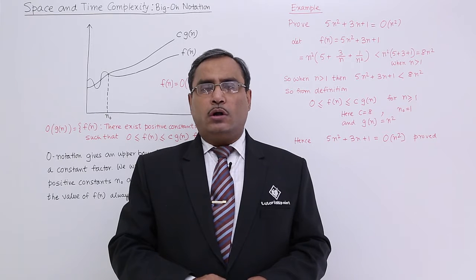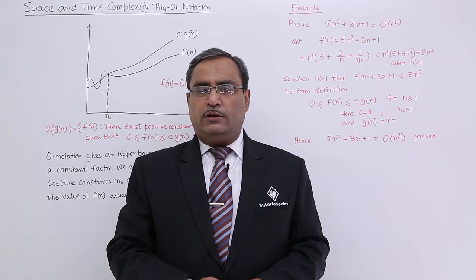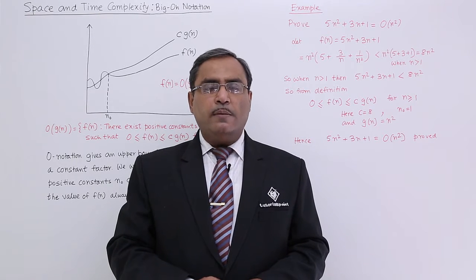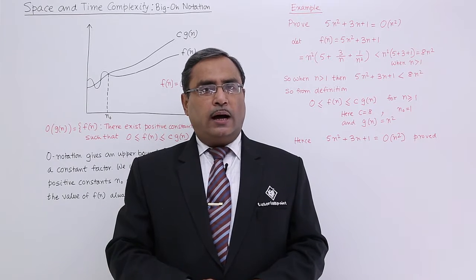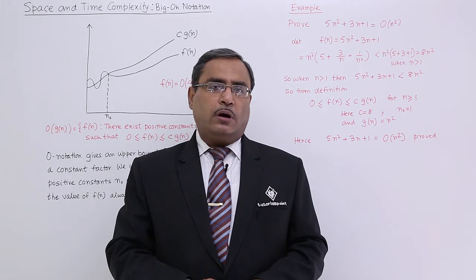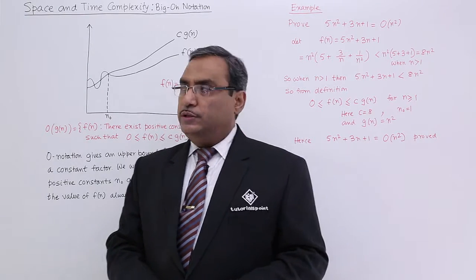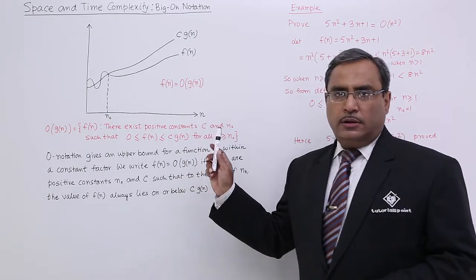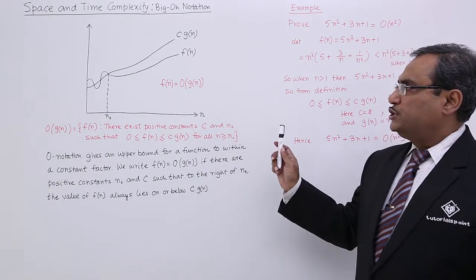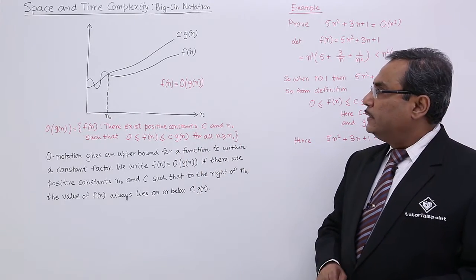Here we are considering the asymptotic notation Big O to calculate the upper bound of the time complexity. The definition of the Big O notation is like this one.